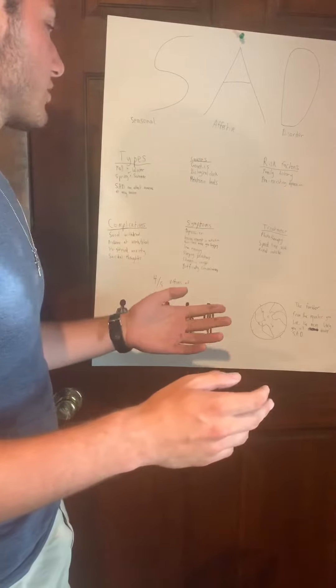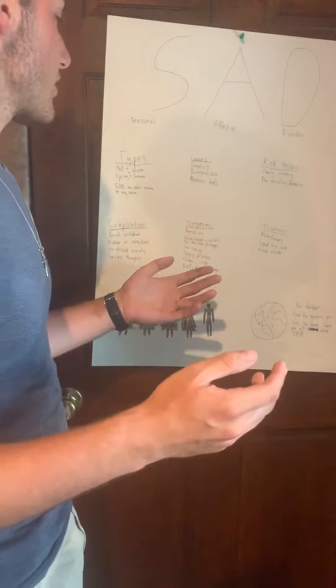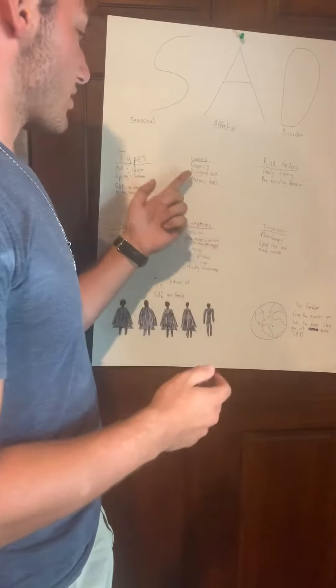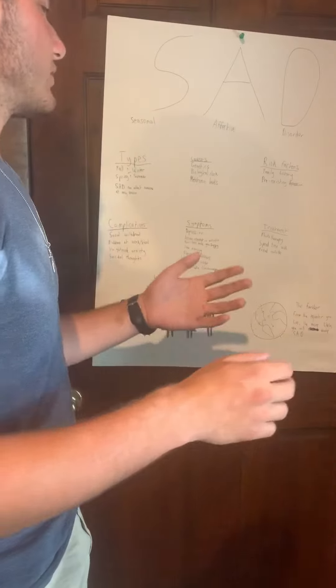Some of the causes are genetics. If your parents or grandparents had it, then you're more susceptible to have it. Your biological clock, meaning your circadian rhythms, when you go to sleep and the amount of sunlight you get, that affects the hormones being released and that could lead to seasonal affective disorder.